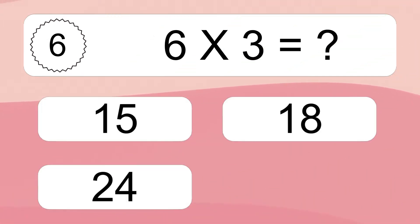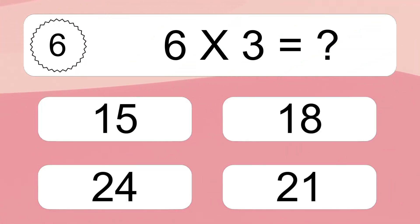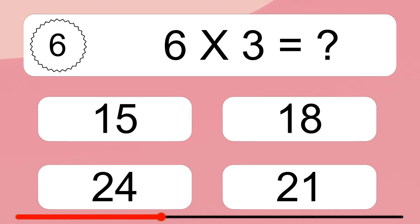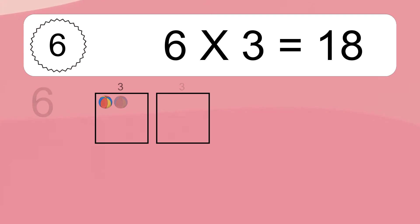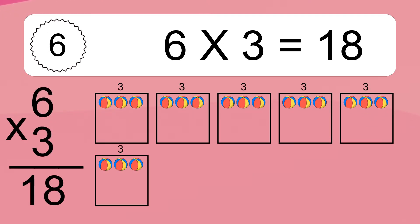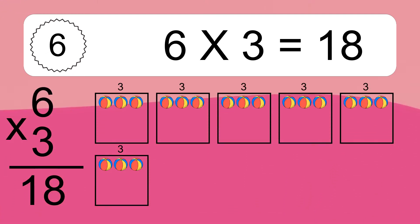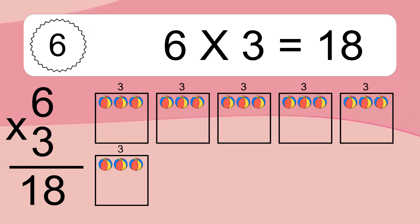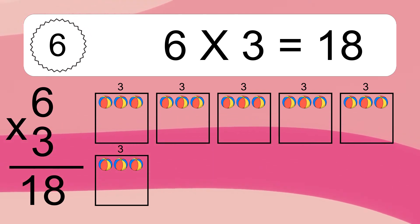6 times 3 equals what? 6 times 3 equals 18. We have 6 boxes and each box has 3 colorful balls inside. If you count all the balls in all the boxes together, you will have 6 times 3 balls. This equals 18 balls.